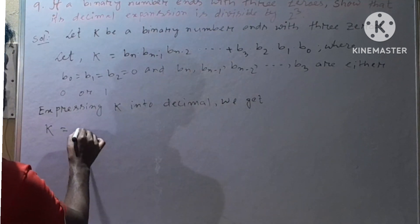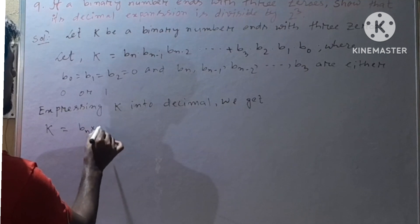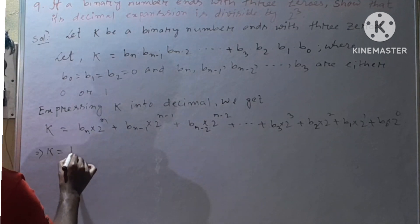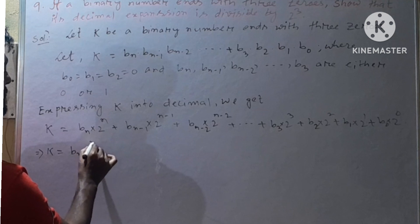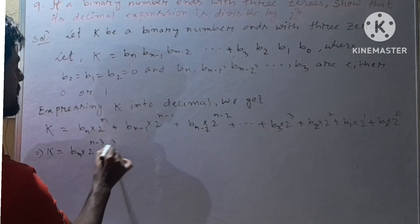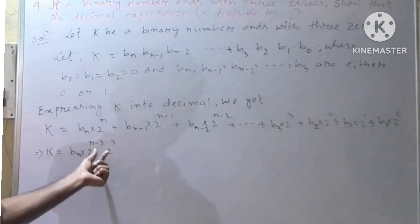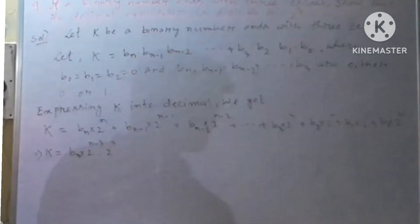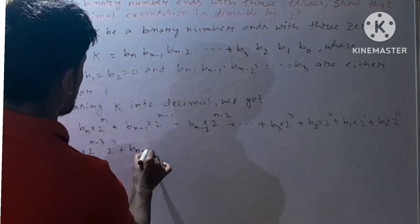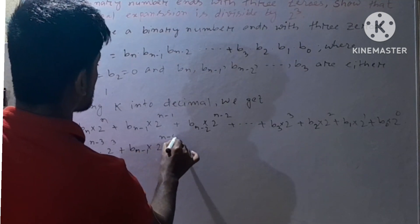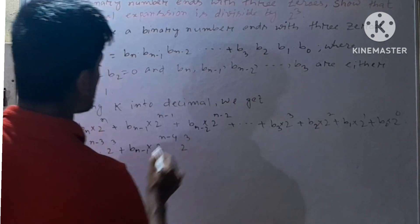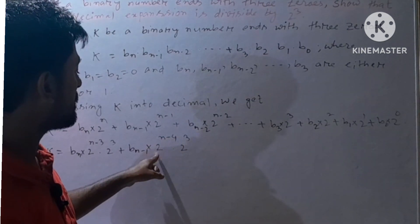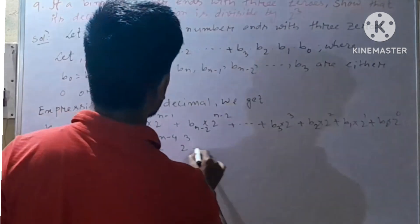Since base is 2, we can write b_n × 2^n. This implies b_n = 2^{n-3} × 2^3, since n minus 3 plus 3 equals n. Similarly, b_{n-1} × 2^{n-4} × 2^3, since minus 4 plus 3 equals minus 1, giving power of 2 as n minus 1.